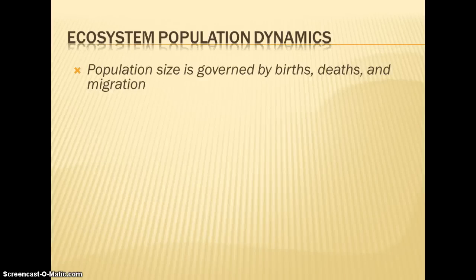Our next topic is ecosystem population dynamics. We're going to look at how species grow and change and how their populations are regulated. There are three main factors that determine the size of a population: how many are added each year, or how many are born, how many die each year, and how many migrate in and out.